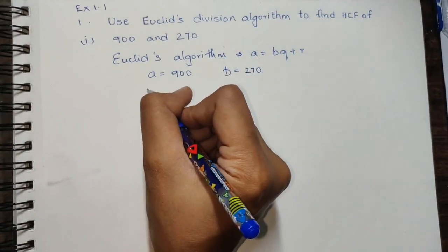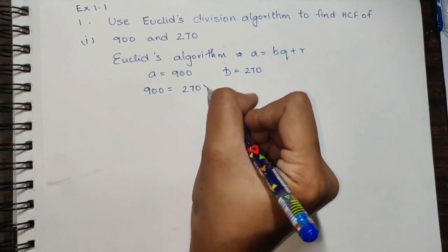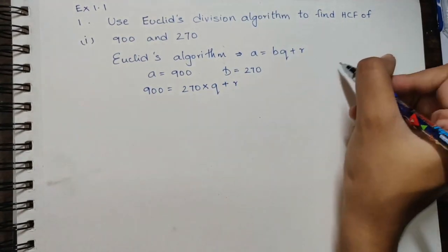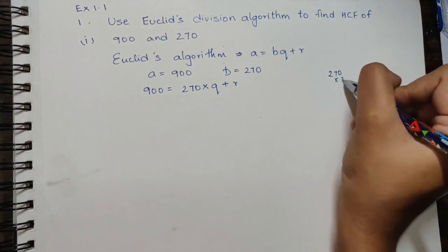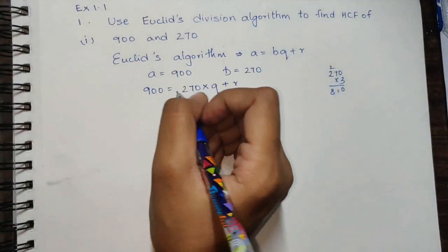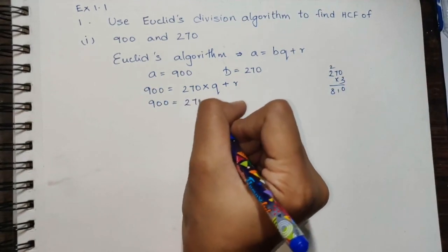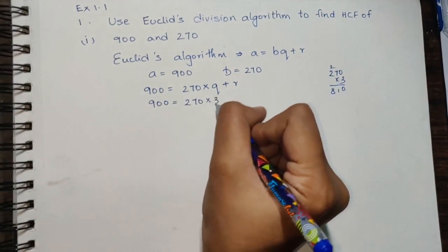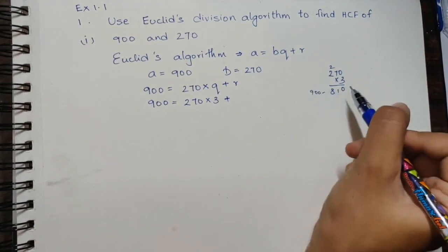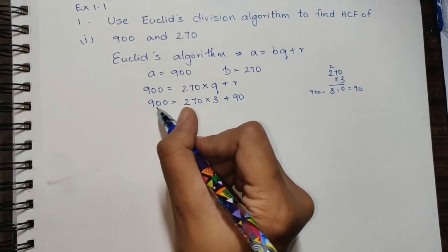So 900 equals 270 into q plus r. If we multiply 270 into 3, we get 810. So our q here is 3, and 900 minus 810 would give us 90. Therefore, 270 into 3 plus 90 will give us 900.